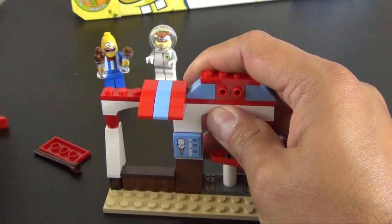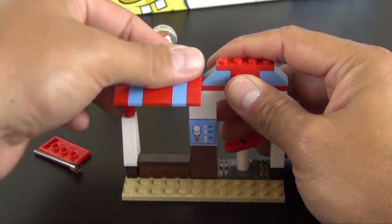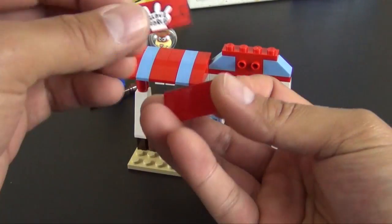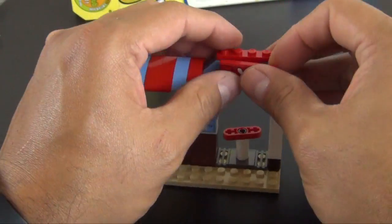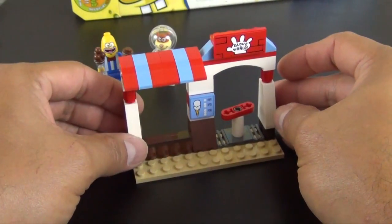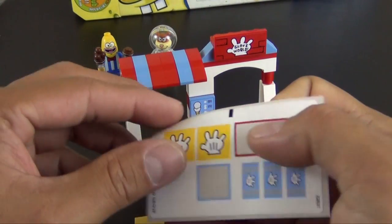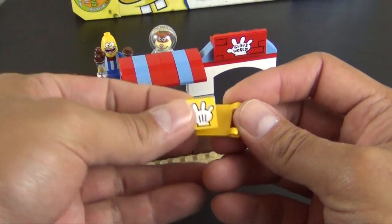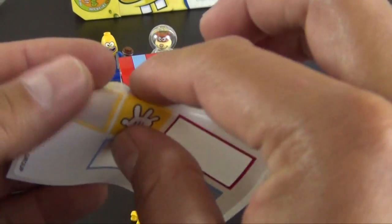And this is going to be the canopy over the ice cream stall, just like that. Another sticker, this is the entry sign into Glove World. And lastly, we have a flag with two Glove World logos.